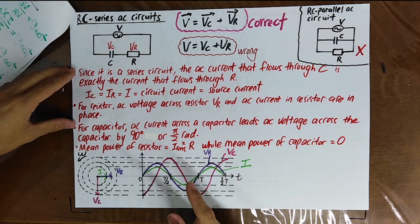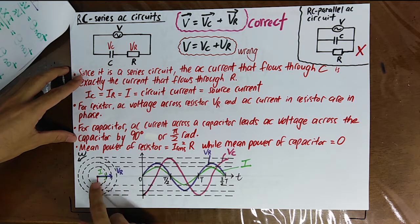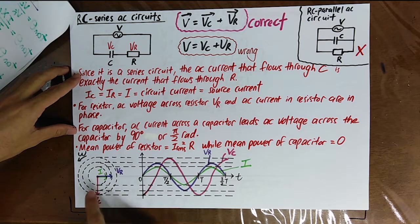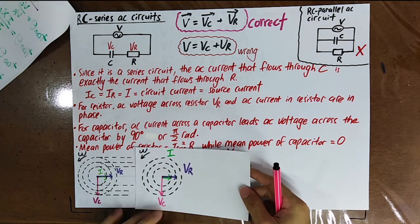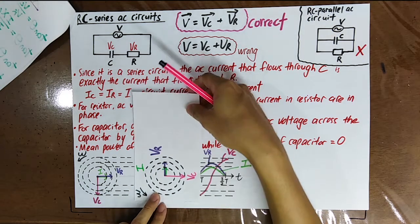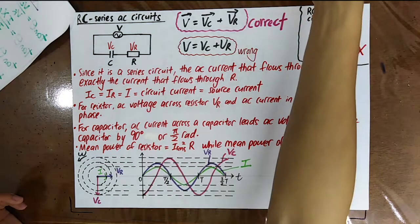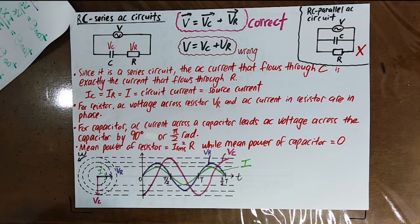Draw a phasor diagram where VC lags behind I and VR by 90 degrees, and VR and I are in phase. Normally we draw it with VR along the positive direction because we prefer the positive sine function. Any orientation is correct as long as VR and I are in phase and they lead VC by 90 degrees.